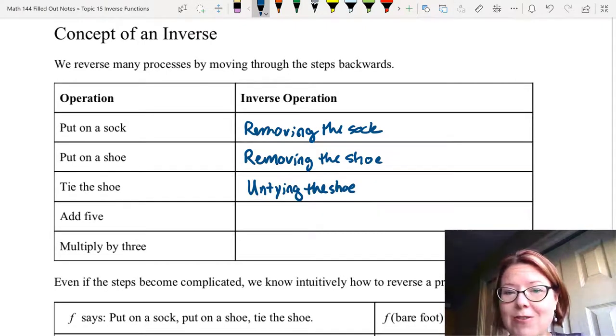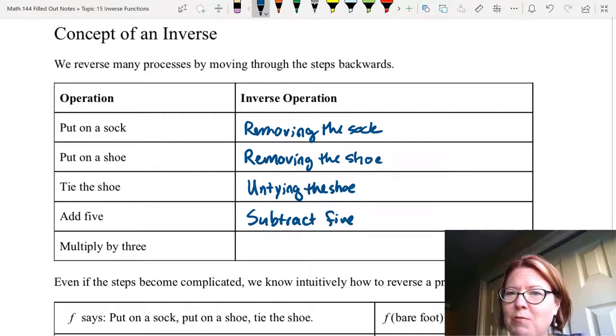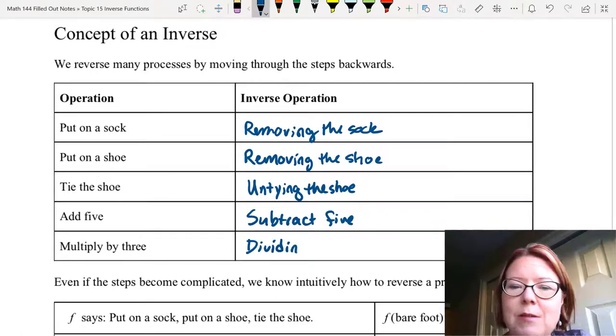If we add 5, we can reverse it by subtracting 5. And if we multiply by 3, we can reverse that by dividing by 3.